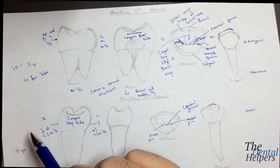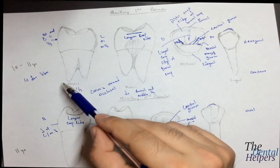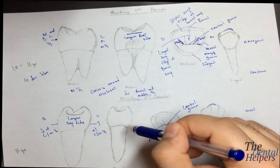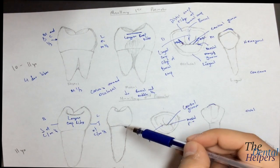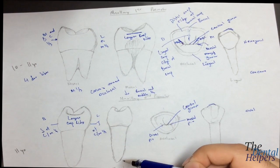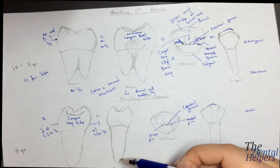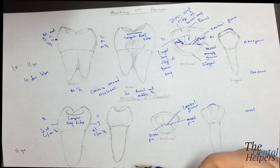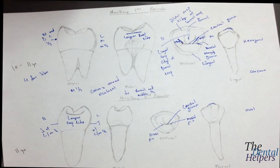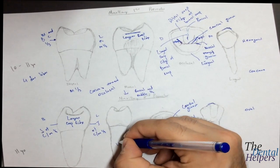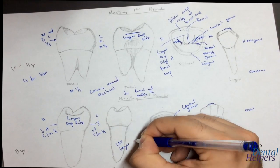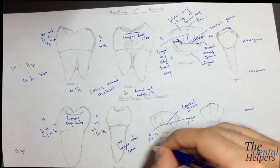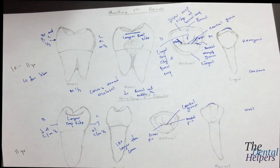The maxillary first typically has two roots — a buccal and lingual root — and two canals. The maxillary second typically has one root, but occasionally you will see two canals or even two roots, making it a unique tooth. What makes it especially unique is that the root is 1.8 times longer than the crown, which is a significant detail.